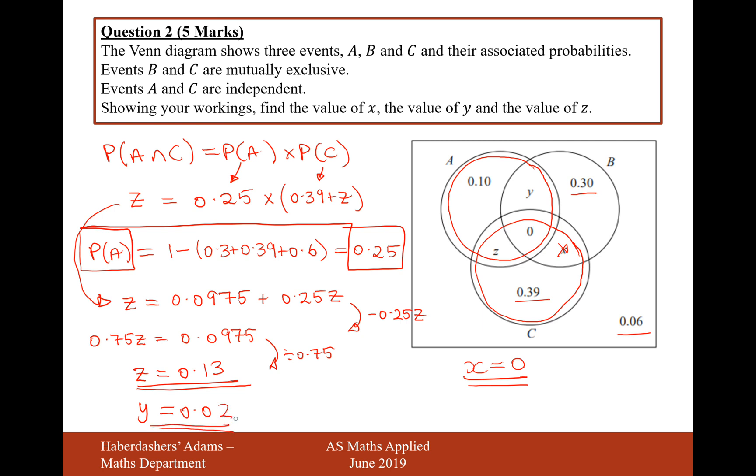So there we are. That's the answer for this question here, worth five marks in total. They're a real little tricky question, this one. Very well done if you've got this one. Hopefully it's made sense as I've explained it. There we are, that's five marks for this question. Let's now move on to question three.